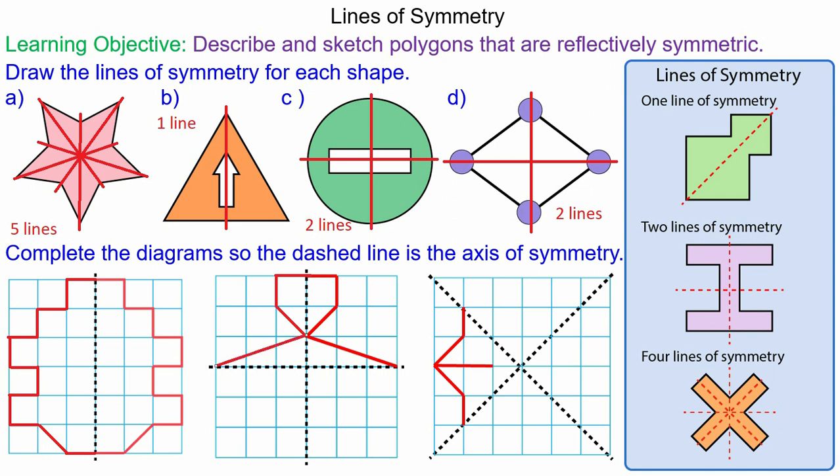And now we're going to flip this horizontally which is a horizontal reflection. And again every vertex is the same distance from the vertical mirror line.